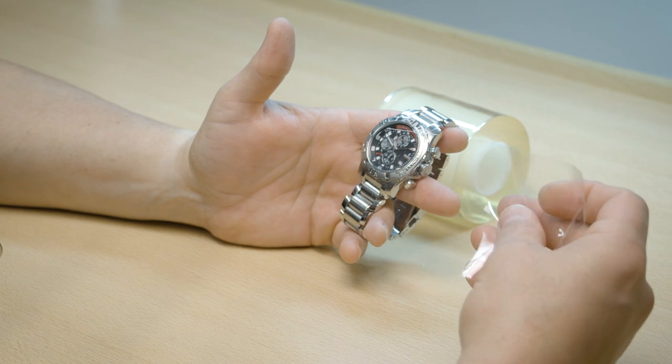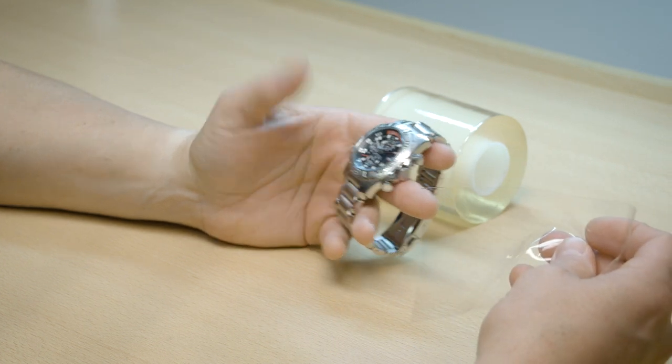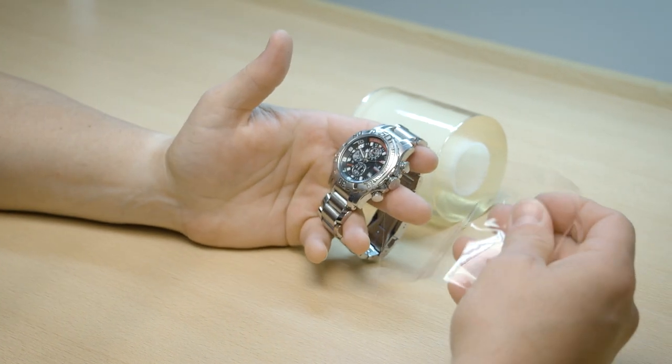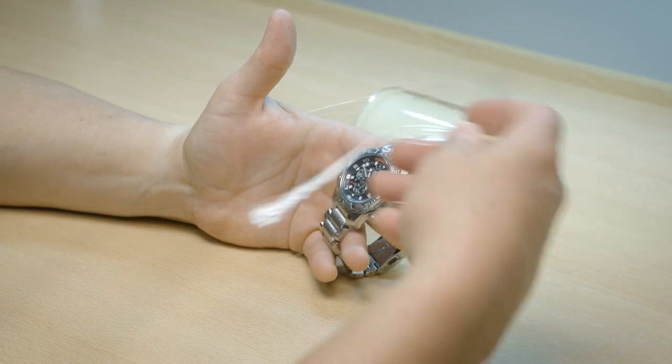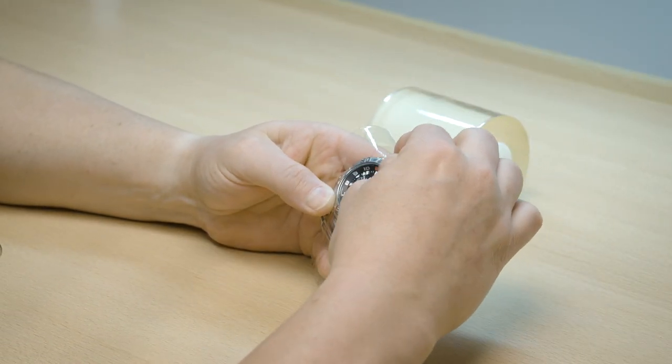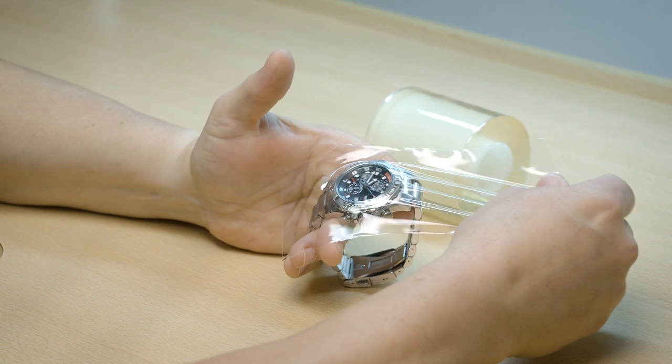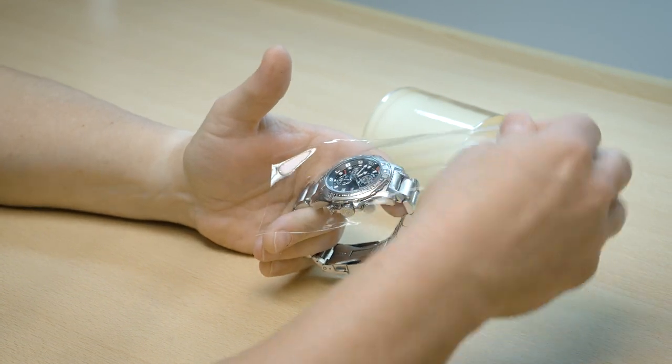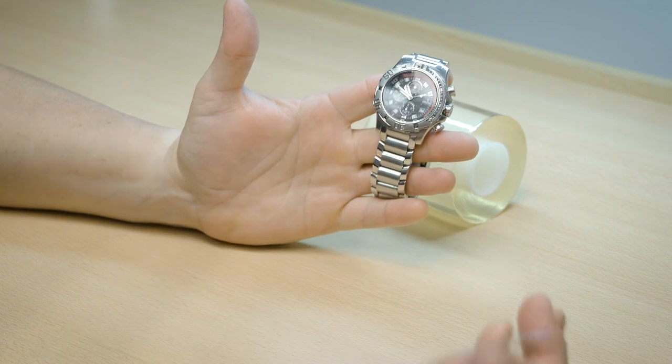This tape will stick very nicely to watch crystals. If you're traveling and you want to protect your watch crystal, cut you a piece off, you can lay it right on top of the crystal, press it down, and sticks very firmly. Peel it off, no residue.